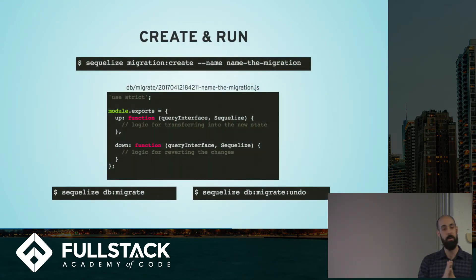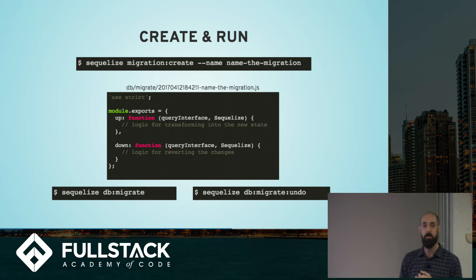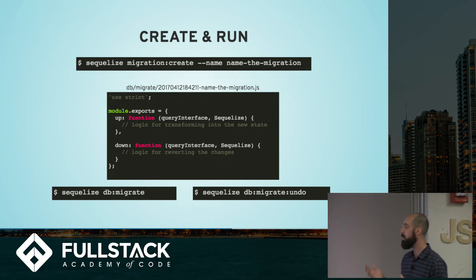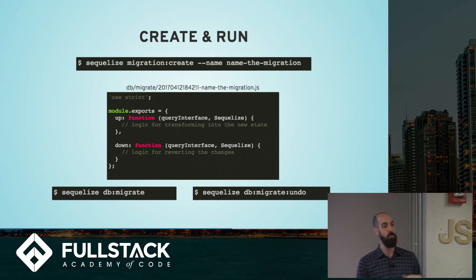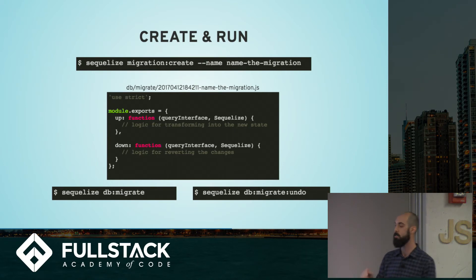When you're ready to create a new migration, you'll go back to your command line and run `sequelize migration:create`, passing in the name flag to name your migration. SQLize will generate a new file in your migrations path. That file contains an object with two functions: an up function and a down function. The up function is called when you run your migration — it describes how you want to change your database from an older state to a newer state. The down function gets called if you're interested in undoing the change, taking the database from a newer state back to an older state.